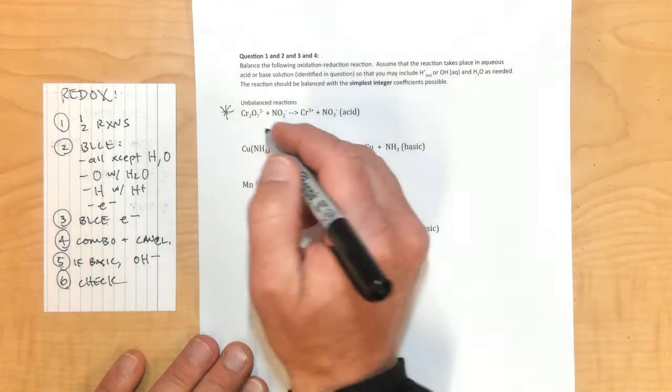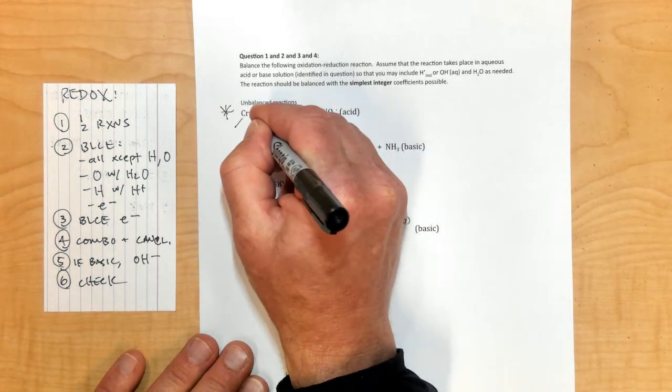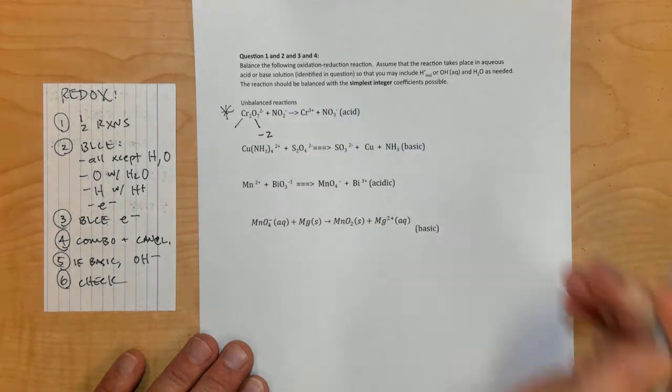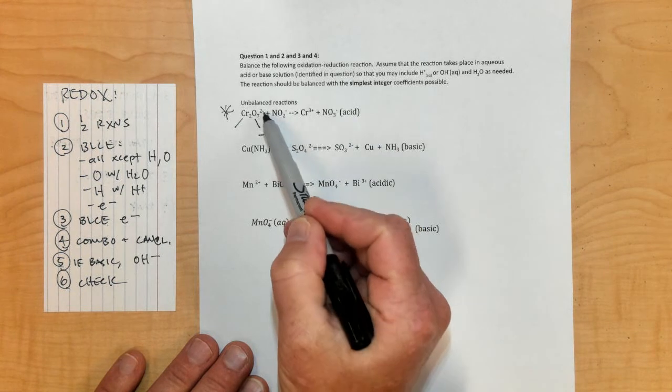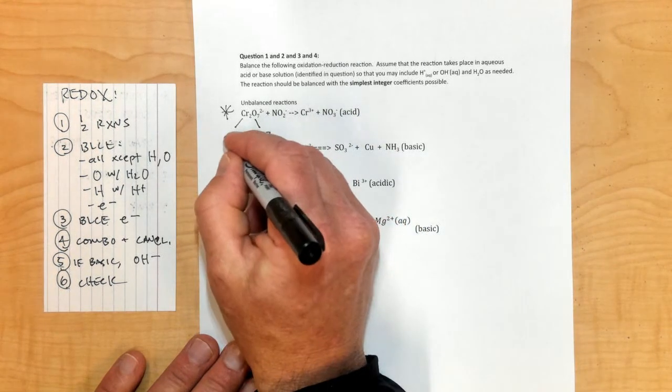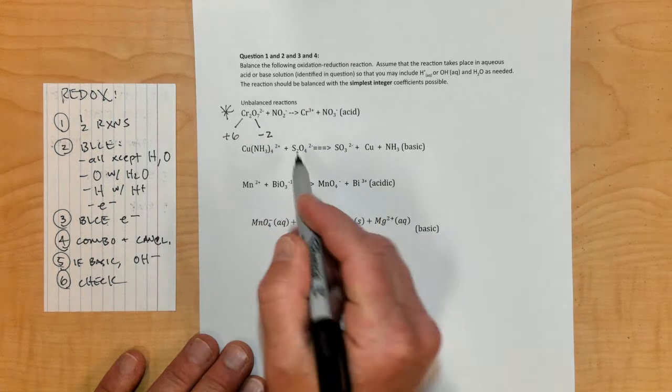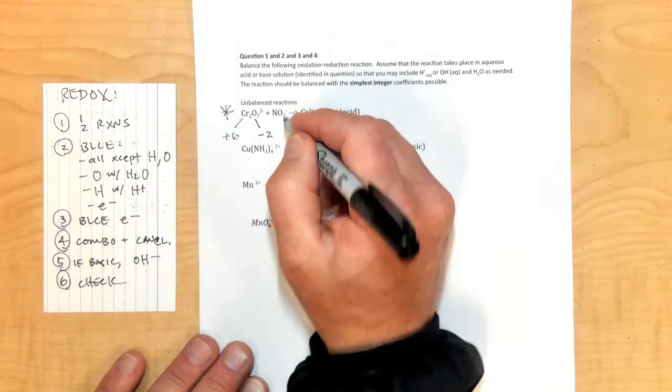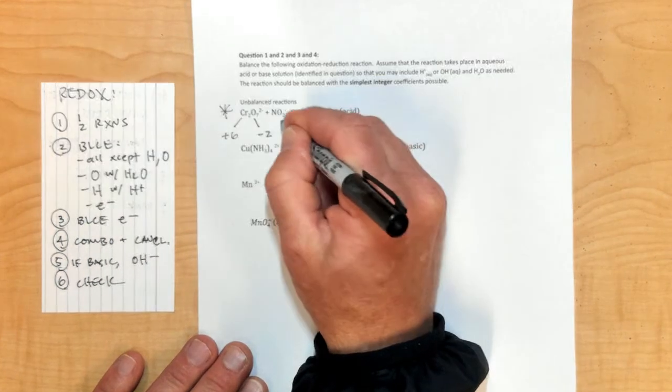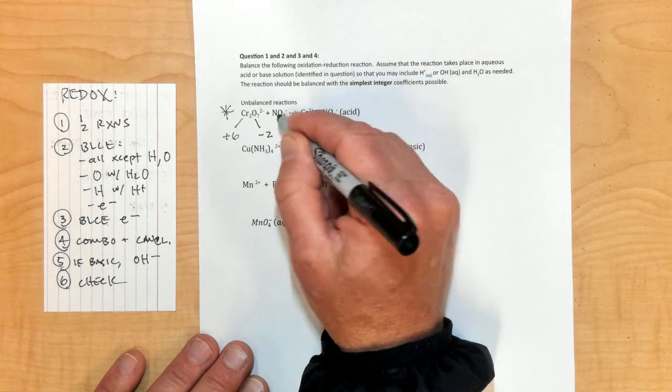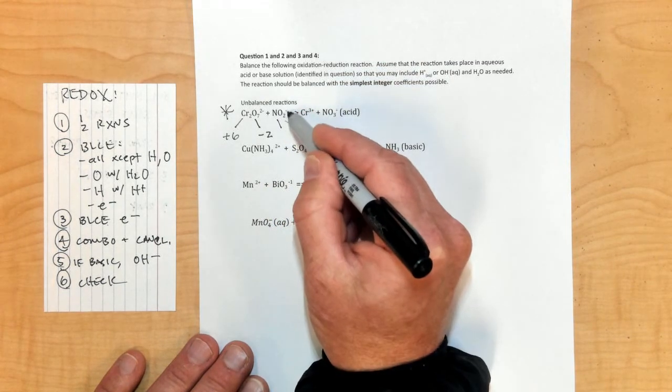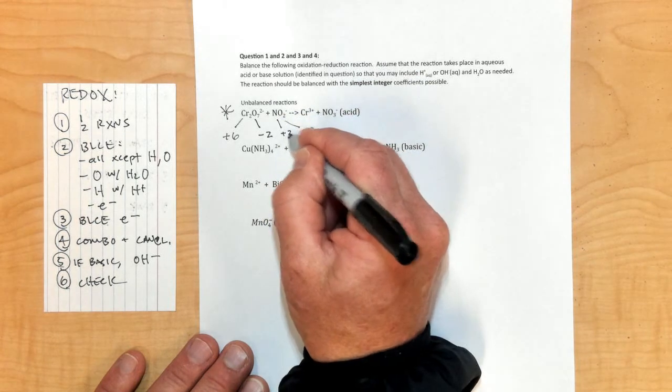Let's work through these steps on balancing a redox reaction. Step number one is to write the half reactions, but I need to assign oxidation numbers to do that. Oxygen is minus 2 always, and so 2 times 7 is negative 14. It's got to add up to negative 2, so 2 times positive 6 for chromium would give me negative 2.